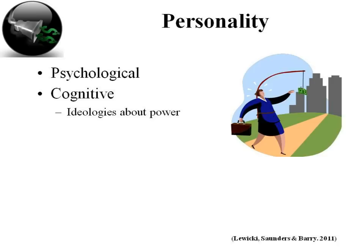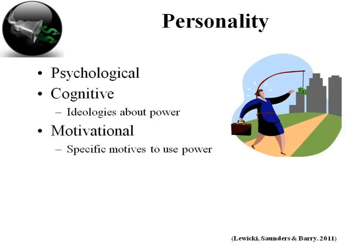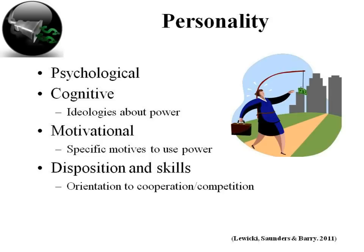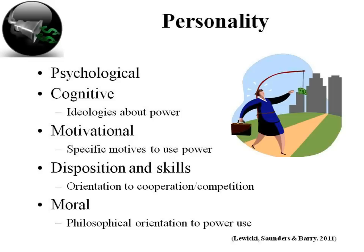The pluralist frame believes power is distributed relatively equally among groups, allowing for continual bargaining and an evolving balance of power. The motivational orientation is that there are specific motives to use power — you may have a strong need to control and influence others, for instance. Disposition, skills, motivation, and personality all factor in. The orientation is to cooperation or competition: are you more likely to seek power over or power with the other party?